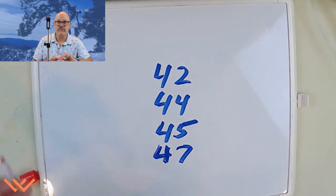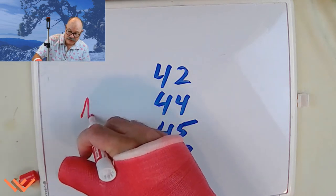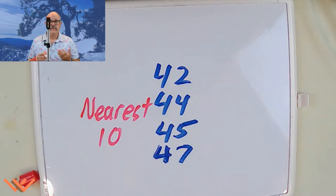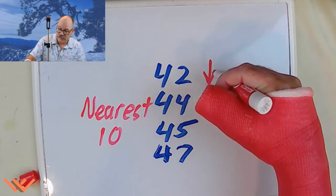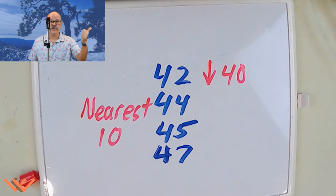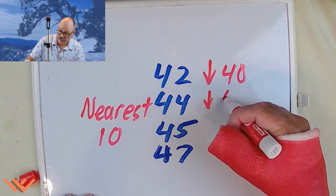What does that mean? Well, if we're going to round to the nearest 10, let's take a look. So 42, we go 40, 41, 40, right? There's two away, so we're going to round down to 40. 44, it's 43, 42, 41, 40. There's 4 down, so we're going to round down to 40.